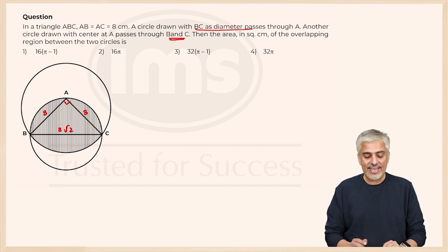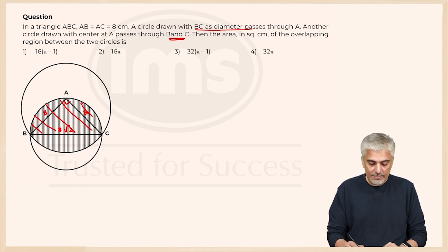Now this whole area is actually going to two parts. One is the semicircle itself, which you can see that is what part I told you BAC. If you want, I can just shade it with red. This is the part. This is the semicircle.